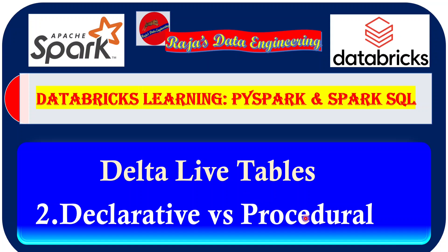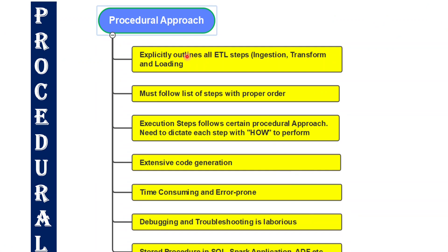In the procedural approach, we have to explicitly outline all the ETL steps. We have to specify the logic and write the code for extraction, applying various transformations, and then loading the data into the target system. For each and every step we have to explicitly create the logic and write the code. To achieve a certain final output there is a list of steps we need to perform in proper order — if you change the order it will produce wrong output.